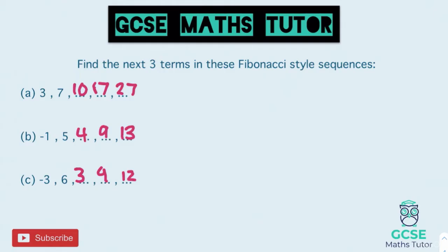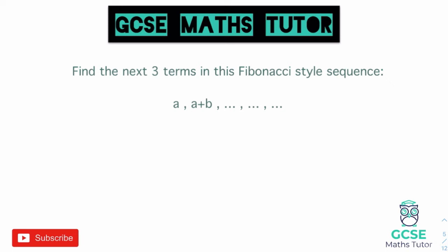Now we're going to have a look at something where we involve a little bit of algebra. This question says find the next three terms in this Fibonacci-style sequence, and rather than numbers we have some expressions: a and a plus b. So we need to collect like terms. We have a plus a plus b, which gives us 2a plus b for our third term.